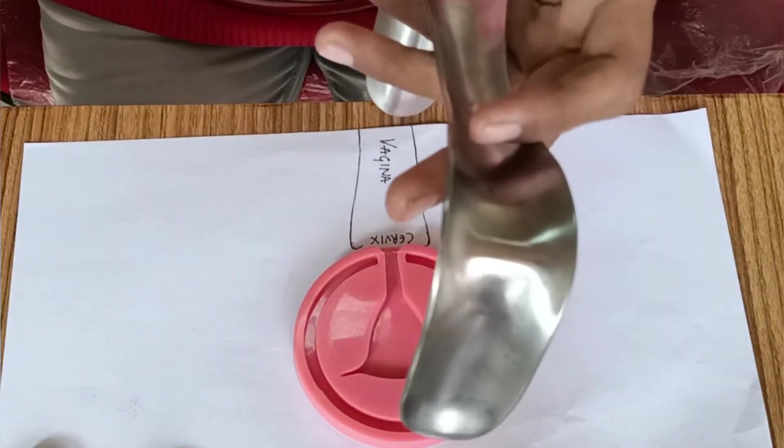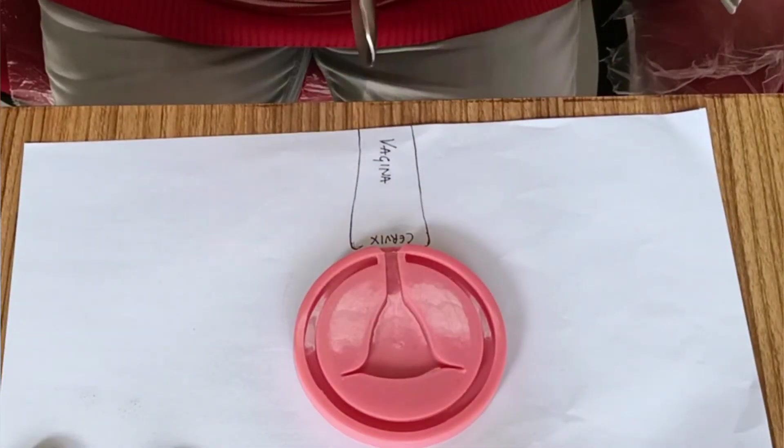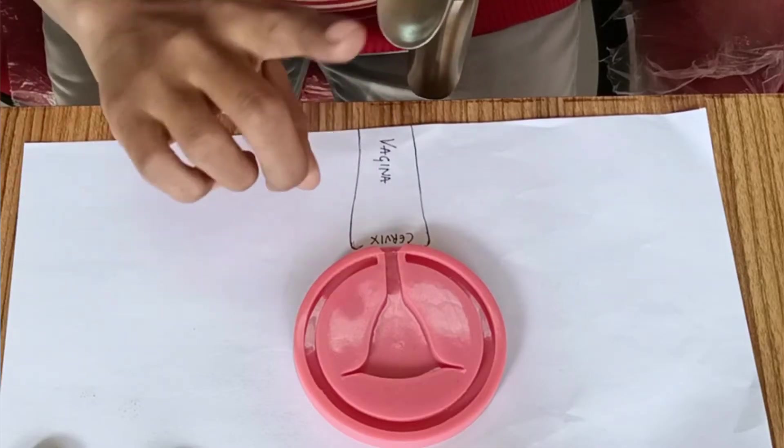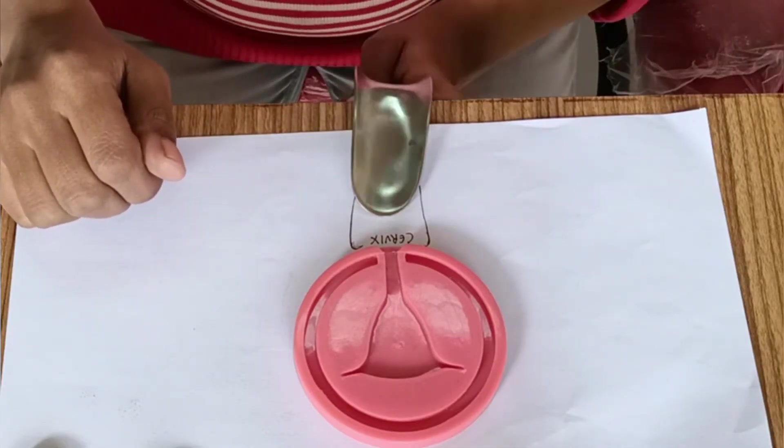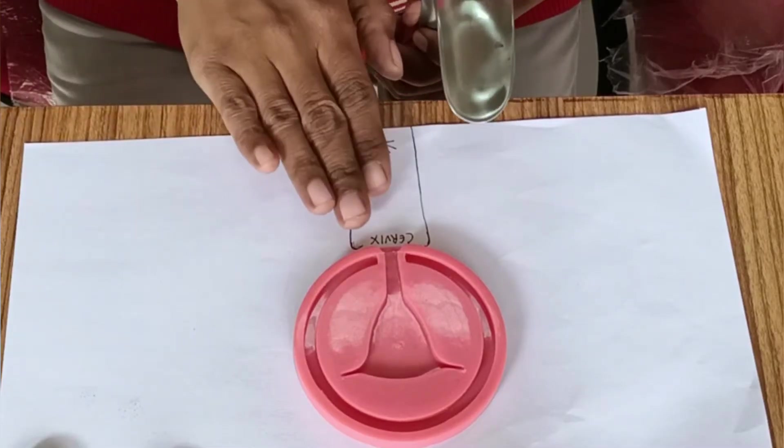Then we use the Sims speculum to retract the posterior vaginal wall. Do not enter the speculum as such. Go parallel to the vulva and the lateral vaginal wall, and then rotate the speculum to depress the posterior vaginal wall.